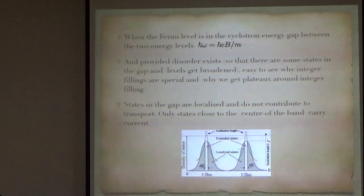The idea is that as long as disorder exists so that there are some states in the gap, it's easy to understand why you will get these plateaus, because as you change the magnetic field, as long as the states are localized, you don't get any change in the current. When you go through the extended states, you can go to the next Landau level, and you can get plateaus around integer filling. This is the essential old idea of how you explain the quantum Hall effect.